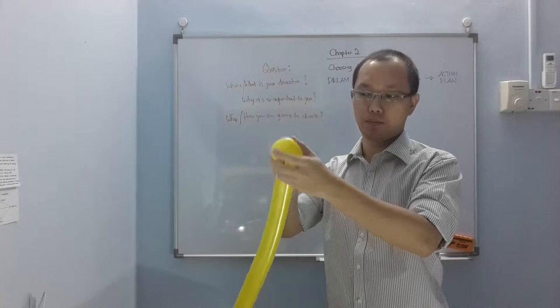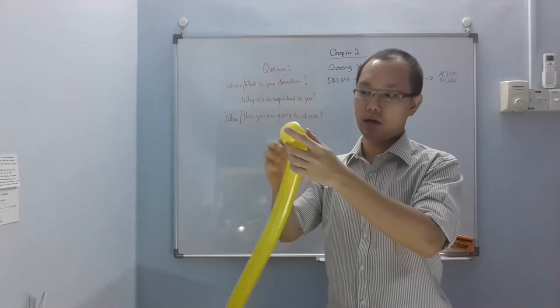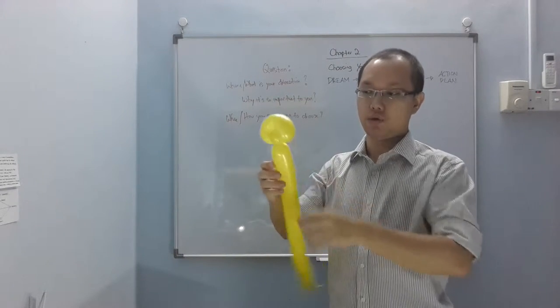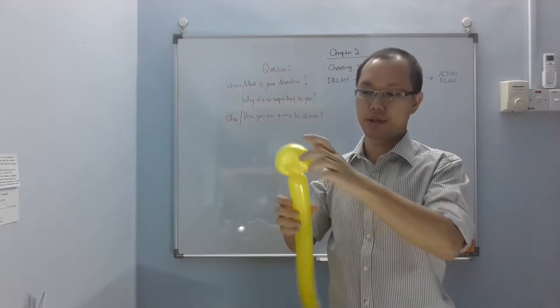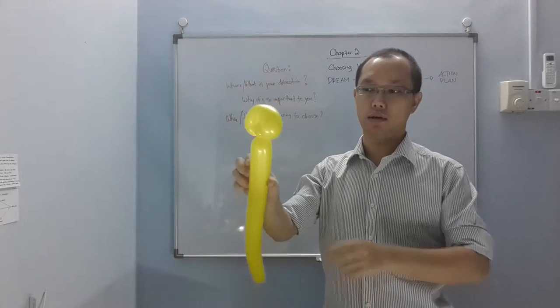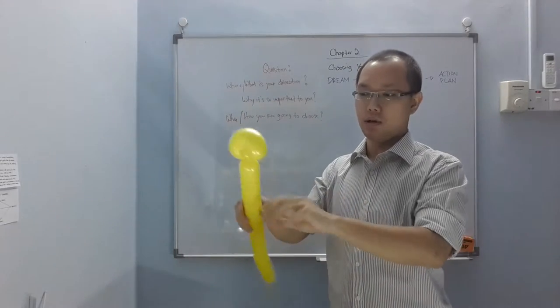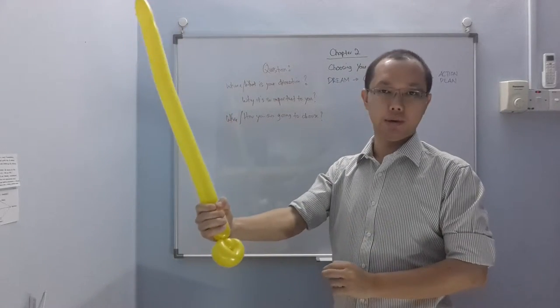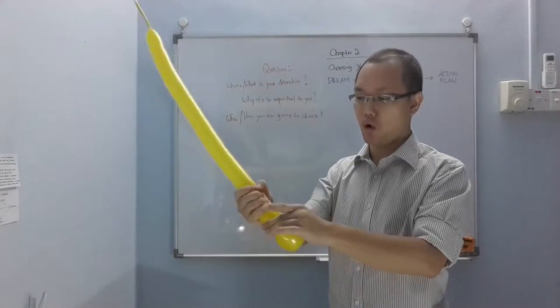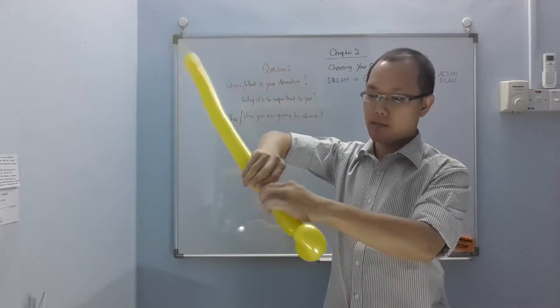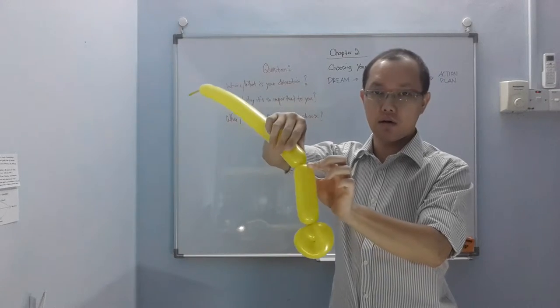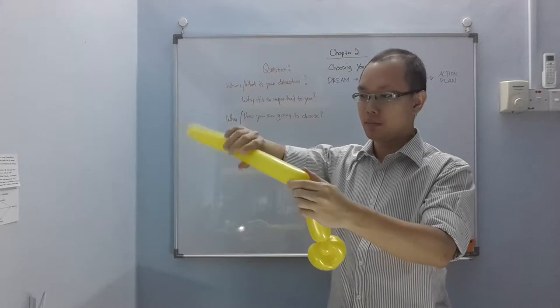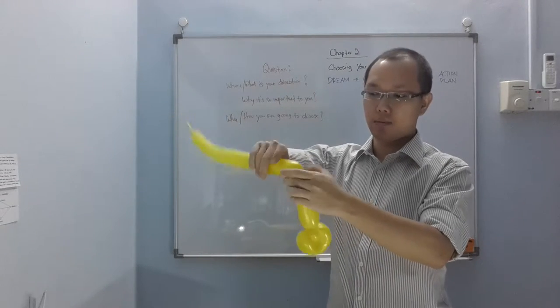Then you're going to push the small bubble to the middle of the loop so that it will stay in the middle. You're going to leave this part because this is the holding part where you're going to hold the sword. I'm going to twist another lock over here to make sure you have a place to hold.